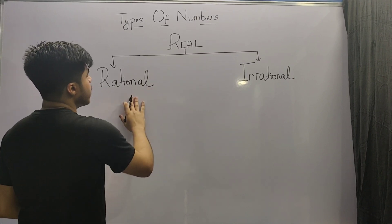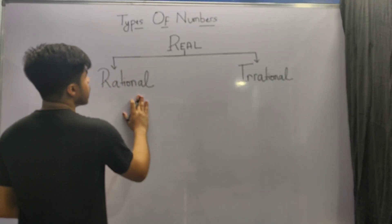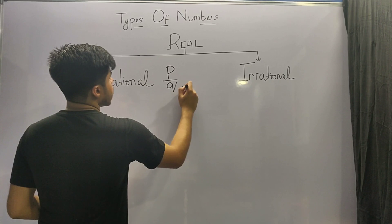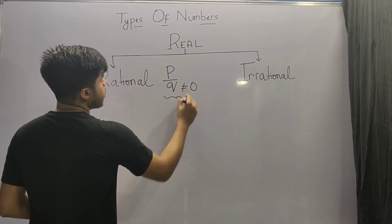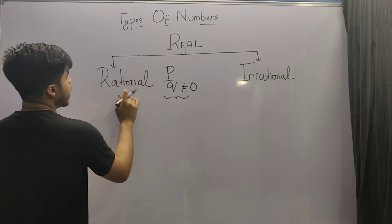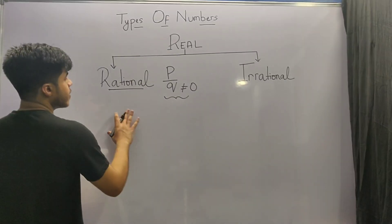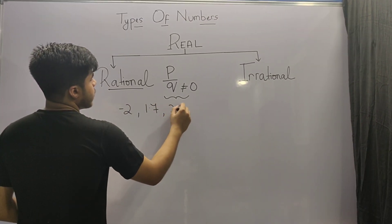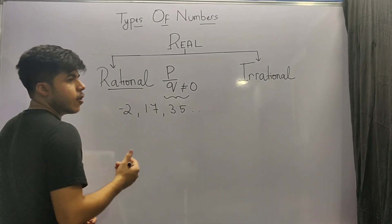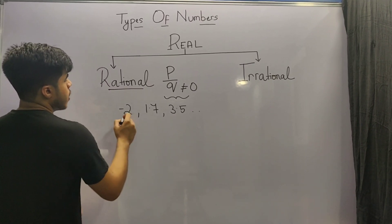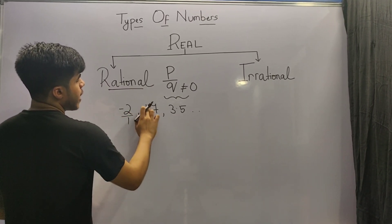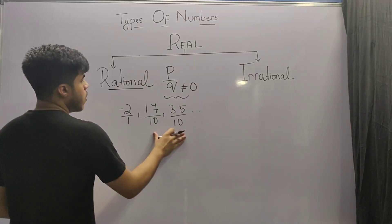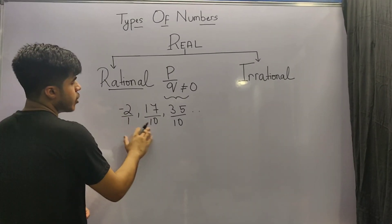Real numbers can be further divided into two types: rational and irrational. Rational numbers are those numbers which can be represented in the form of P by Q, where Q is not equal to zero. Since the numbers can be represented as a ratio, they are called rational numbers. Examples of rational numbers are minus 2, 1.7, 3.5, and so on. All these can be represented in the form P by Q — minus 2 as minus 2 by 1, 1.7 as 17 by 10, and 3.5 as 35 by 10 — and none of their Q values are equal to zero.